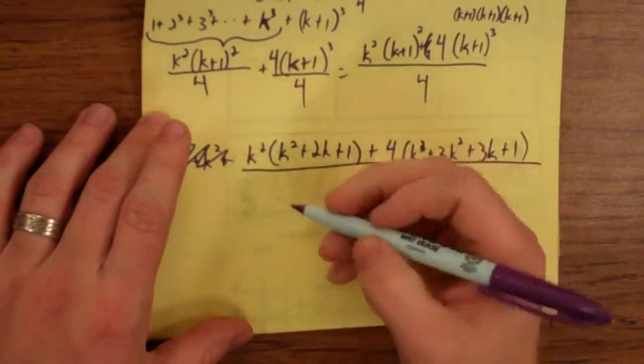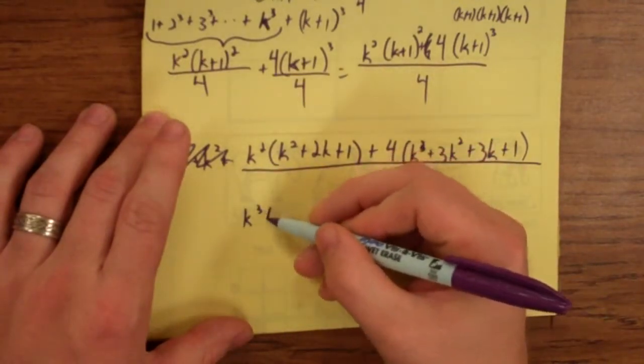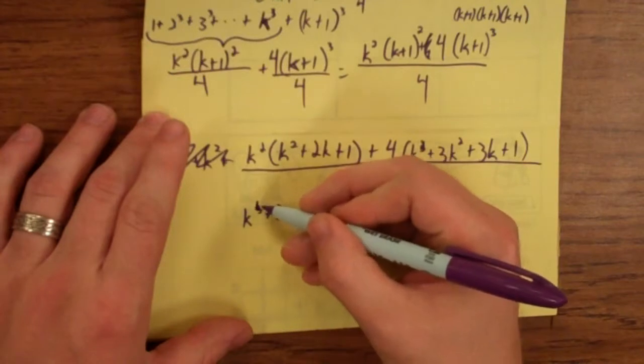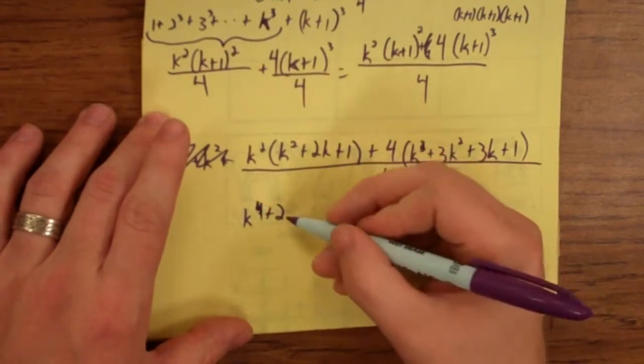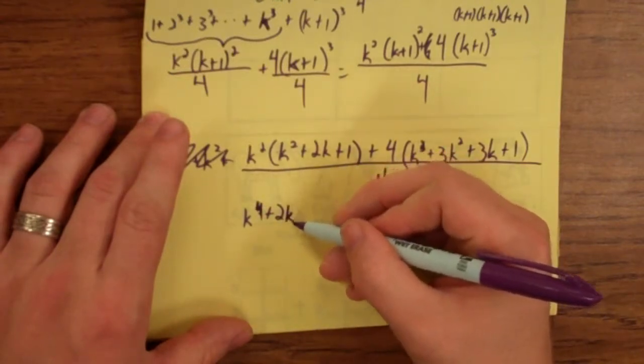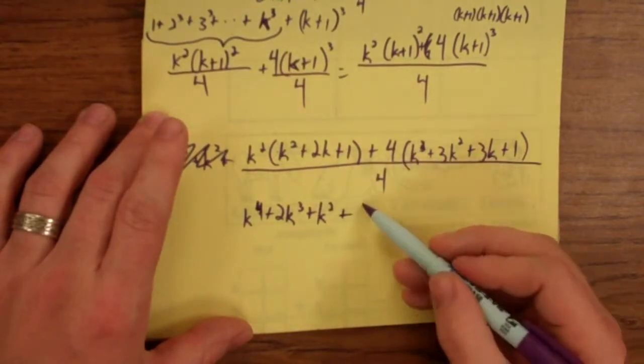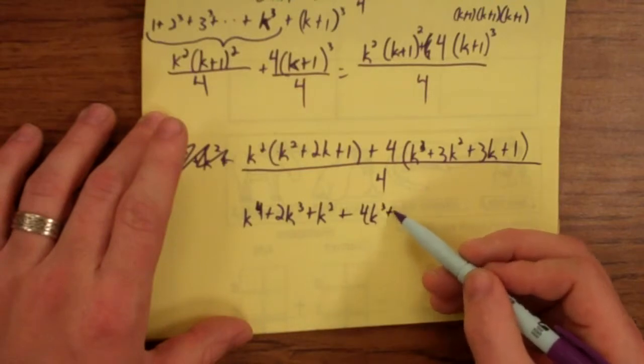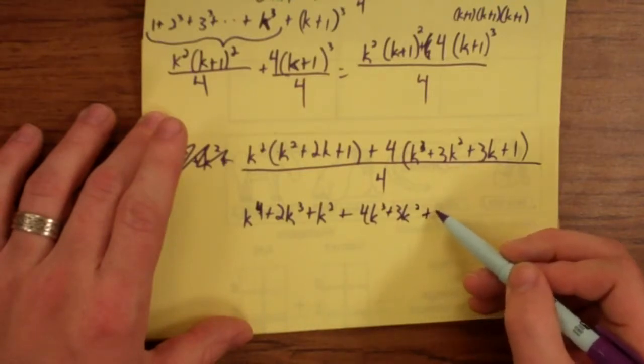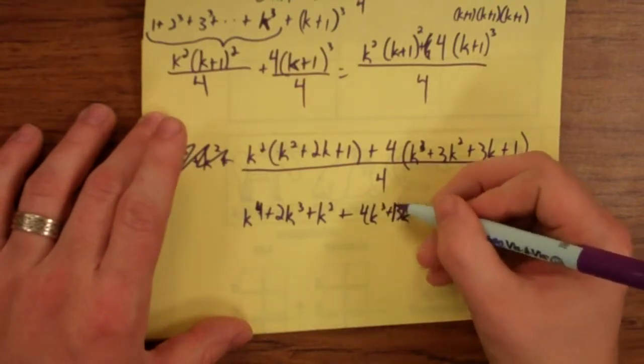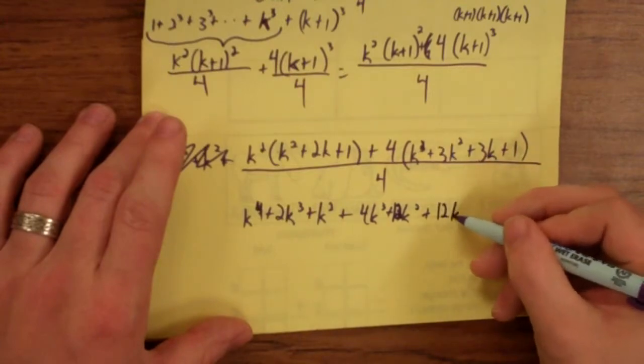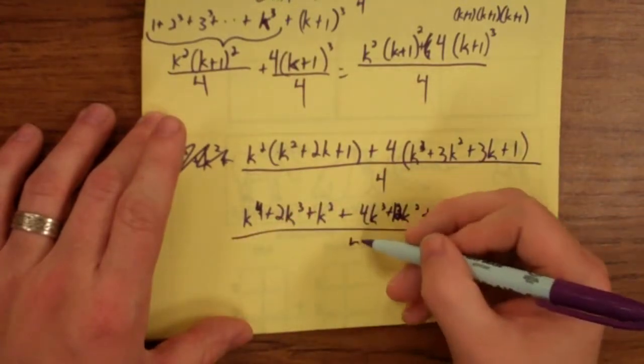So now we're going to distribute the k squared. We get k to the fourth plus 2k to the third plus k squared. Plus, you're going to distribute this 4, 4k cubed plus 3k squared plus, this should be 12 plus 12k plus 4, all over 4.